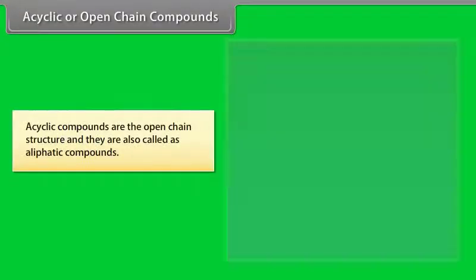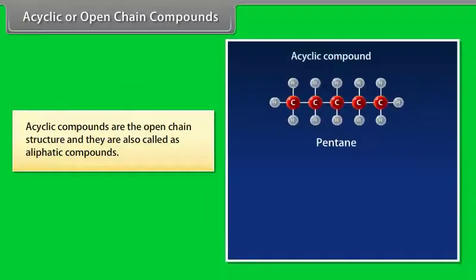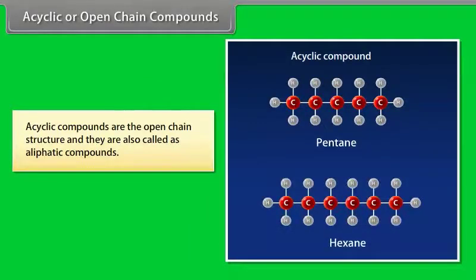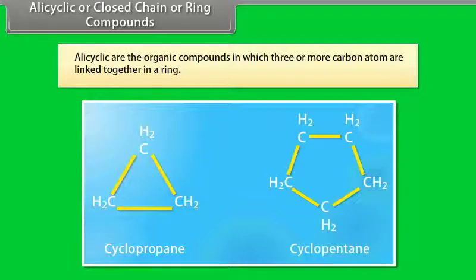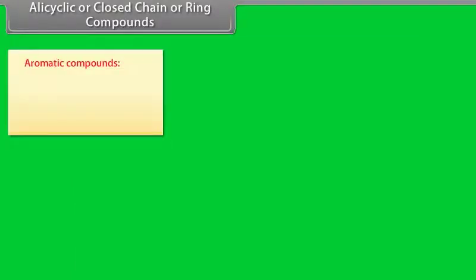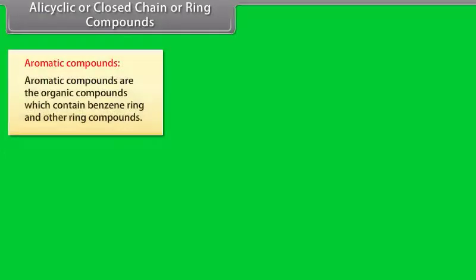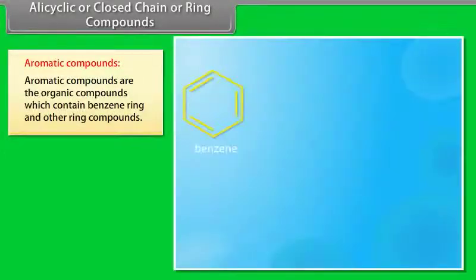Acyclic compounds are open-chain structures and are also called aliphatic compounds. Alicyclic, or closed-chain or ring compounds, are organic compounds in which three or more carbon atoms are linked together in a ring.